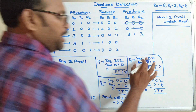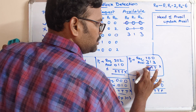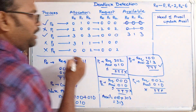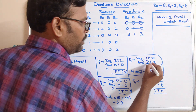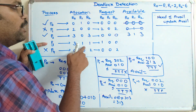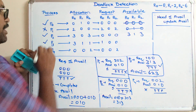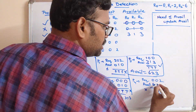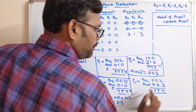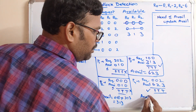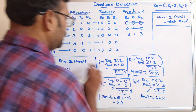Next, P3 requires 1,0,0 and available is 3,1,3 — this is true, so P3 can complete. Available updates to 3,1,3 plus P3's allocation of 3,1,1, giving 6,2,4. Moving to P4: required is 0,0,2 and available is 6,2,4 — all true, so P4 also completes. Available updates to 6,2,4 plus 0,0,2, giving 6,2,6.